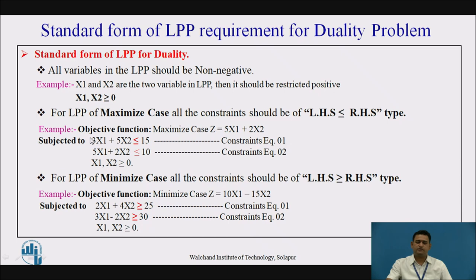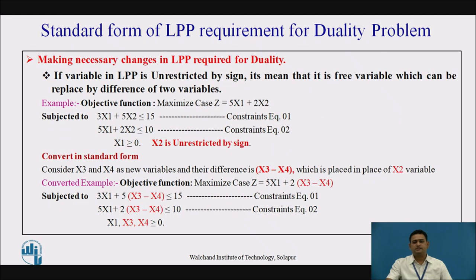For example, in a maximization case: z = 5x1 + 2x2, subject to 3x1 + 5x2 ≤ 15 and a second constraint also restricted by less than or equal to 10. The left-hand side is less than or equal to the right-hand side. For the minimization case, the constraint should be of the type where the left-hand side is greater than or equal to the right-hand side. These are the necessary conditions for converting the LPP to standard form for duality.